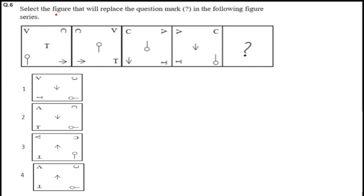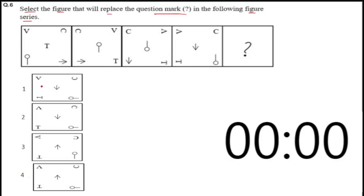Select a figure that will replace the question mark in the following figure series. You have 4 figures and you have 4 options. In the 4 answers, V and C is in the top position, and in the question figures, V and C is in the top position. So we can find out the answer using V and C position.